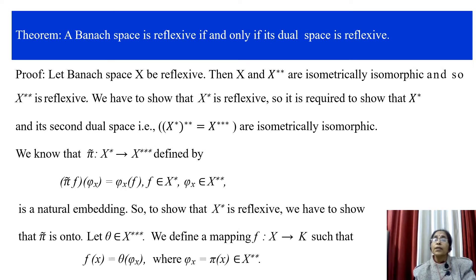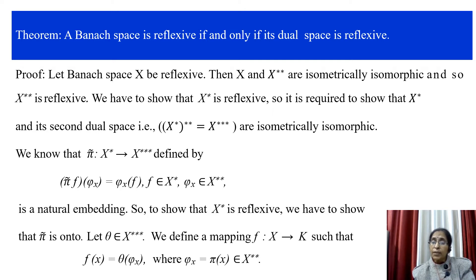We have to show that the dual space X* is reflexive. It is required to show that X* and its second dual X*** are isometrically isomorphic. We know that π̃ from X* to X*** is a natural embedding, defined by π̃(f)(φ_x) = φ_x(f) for every f in X*. To show X* is reflexive, it is sufficient to show that π̃ is onto.